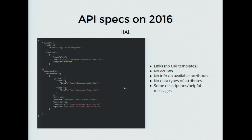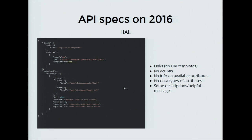The second spec is HAL. It does provide URI templates, but still fails to provide actions — information about how to update or create a resource. There is a HAL extension that does provide that, but HAL by itself doesn't. And there's still no information about what attributes exist on the API or the data types of those attributes — like whether it's a Boolean, a string, and if it's a string, what kind — a date or something else?